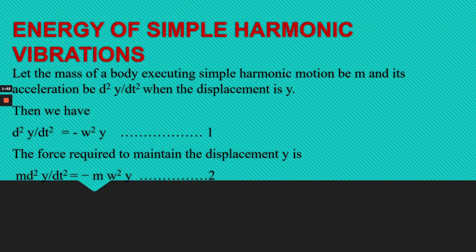Energy of simple harmonic vibration. Let the mass of the body executing simple harmonic motion be m, and its acceleration is d²y/dt². Then d²y/dt² is equal to minus omega squared y — take this as equation 1. Then the force required can be written as m·d²y/dt² equals minus m·omega squared·y — take this as equation 2.